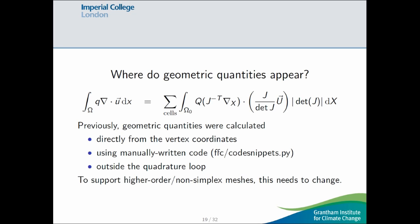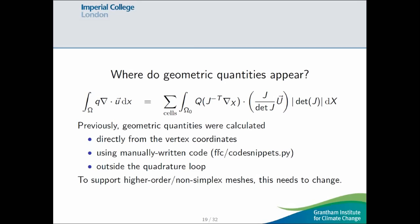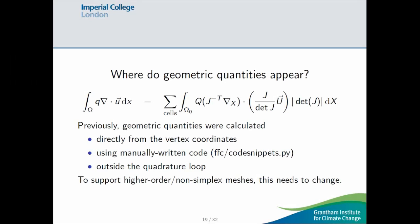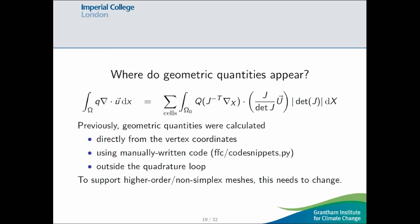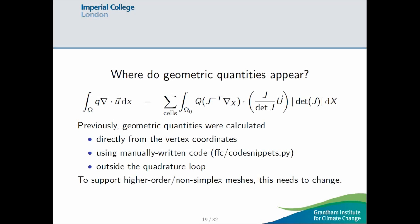For example, these fancy Piola map elements, their values themselves depend on the Jacobian. And if you have explicit geometry terms, like the normal vector, then these also depend on the coordinates. So, you start with this quite tame looking thing here, and it gets expanded out into this mess. And previously, the geometric quantities, so here just the Jacobian entries, they were calculated, firstly, directly from the vertex coordinates. Secondly, using manually handwritten code, this is in FFC Codesnippers.py, and also in some of the header files in Dolphin and FireDrake.